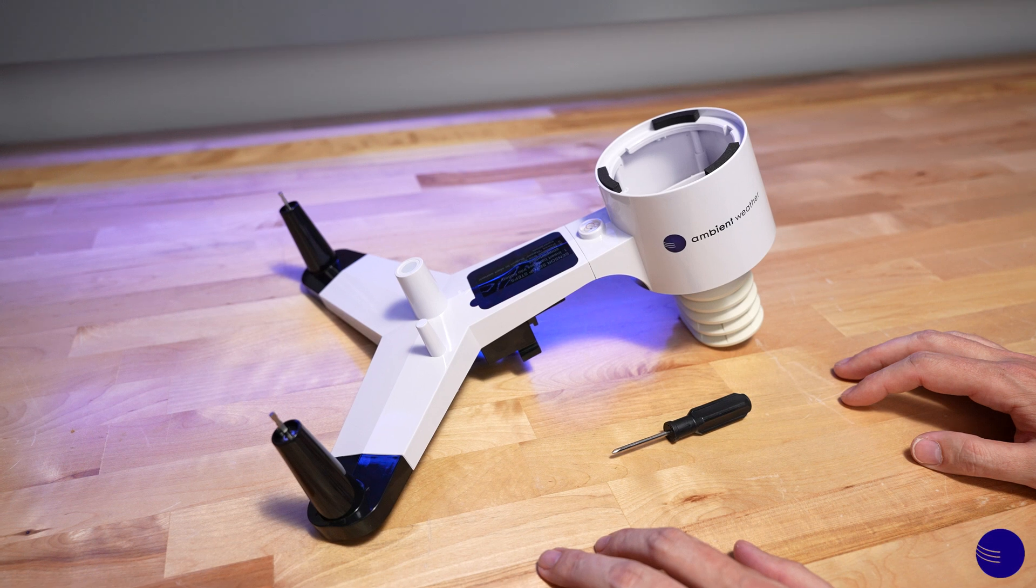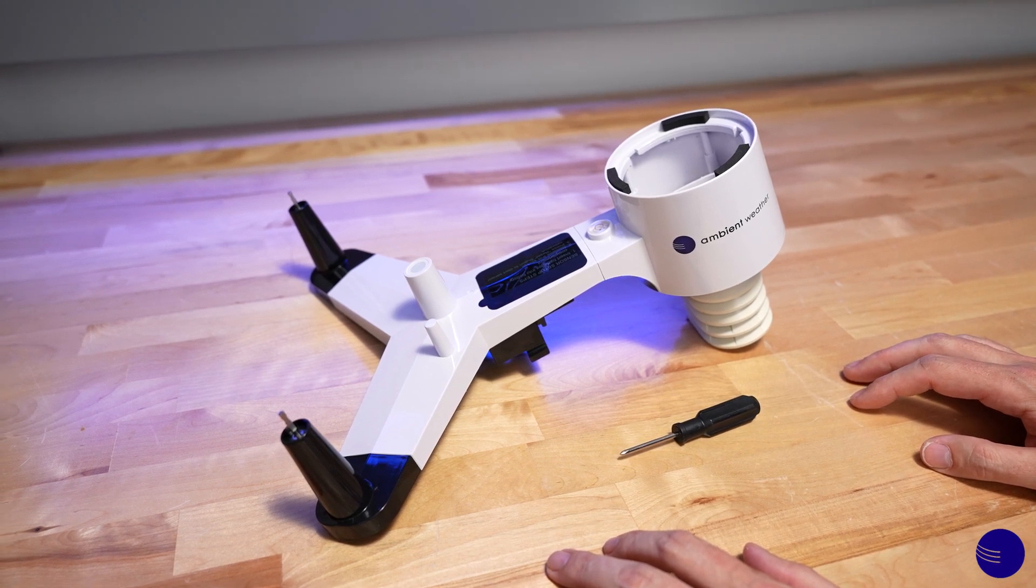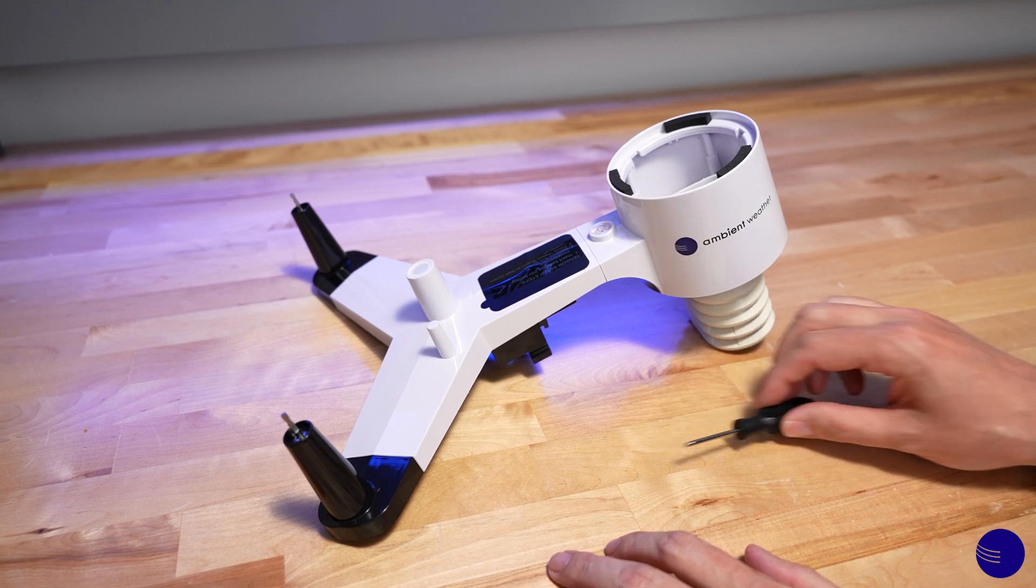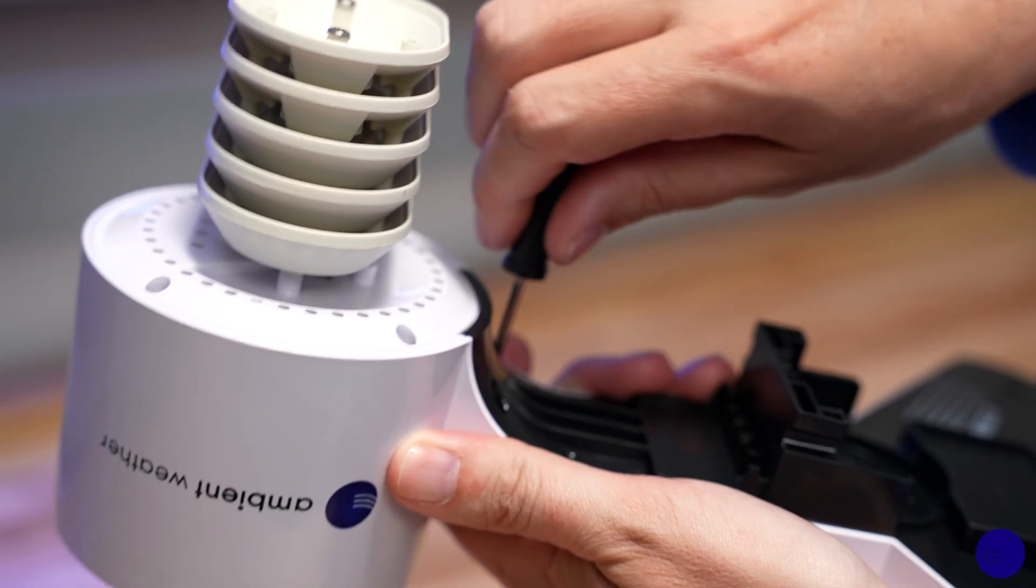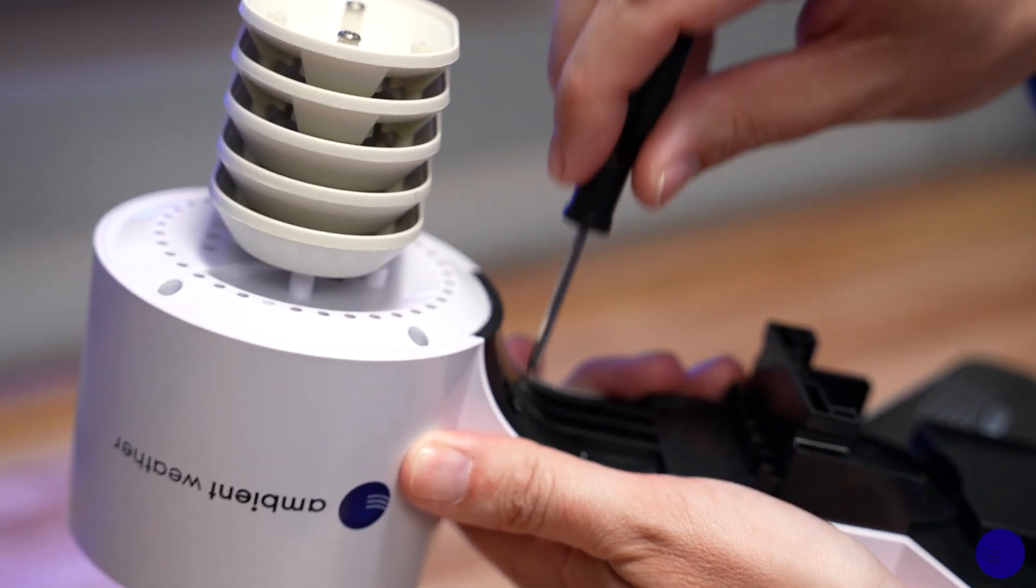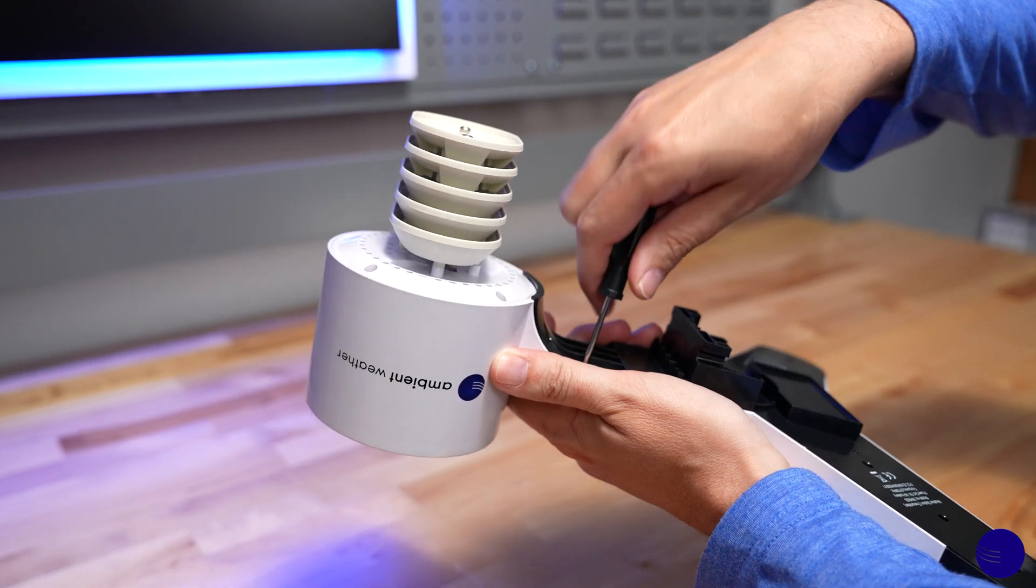Now that we have our WS2902 array, we can go about the process of replacing the sensors. The first step is to remove the rain gauge. We'll remove these screws as well as these two screws here.